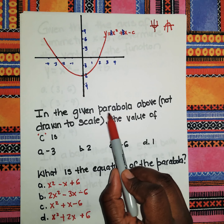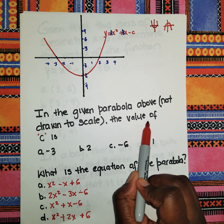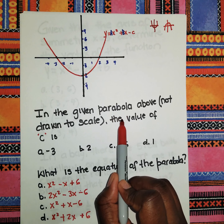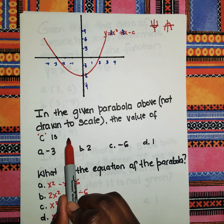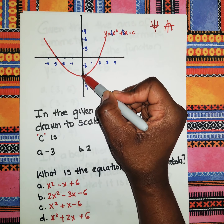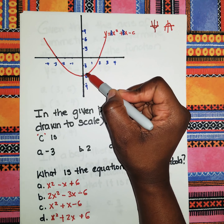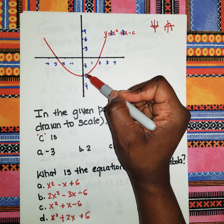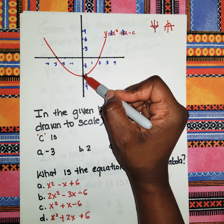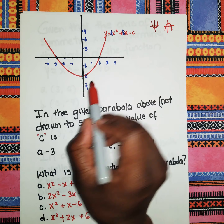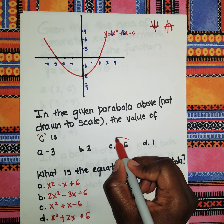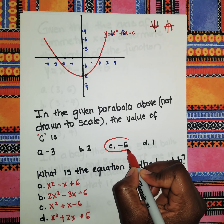The general form given is ax² + bx − c. We're asked to find the value of c in the parabola above. The value of c is basically where the graph cuts the y-axis, and the value of c here is negative six.